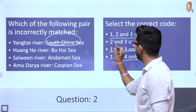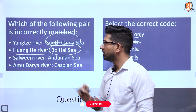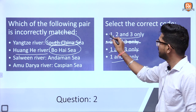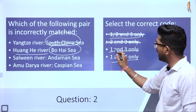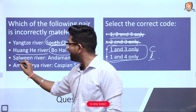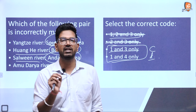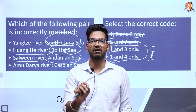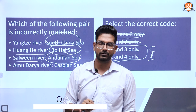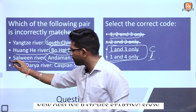Let us see the important question that can be asked from your South Asia part. The first question: which of the following pair is incorrectly matched? We have: Yangtze river — South China Sea; Huanghe river — Bohai Sea; Salween river — Andaman Sea; Amu Darya — Caspian Sea. Which of the following is incorrectly matched? You have 30 seconds — write your answer in the comment box.